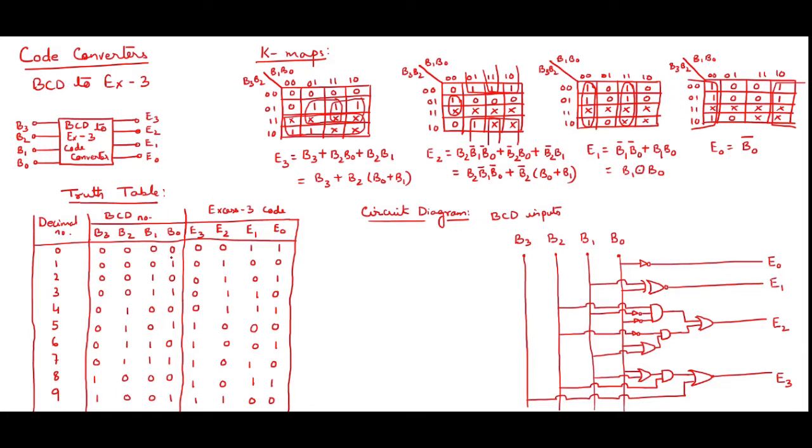So in XS3 we do not have 0. I am going to say that it starts from 3. So 0 in BCD will represent 3 in XS3, so you can see it is 0, 0, 1, 1. 1 means 1 plus 3, it is 4. So 0, 1, 0, 0.